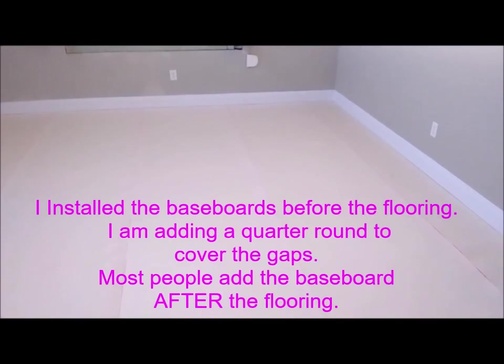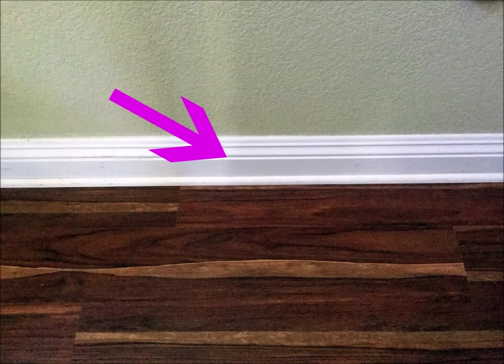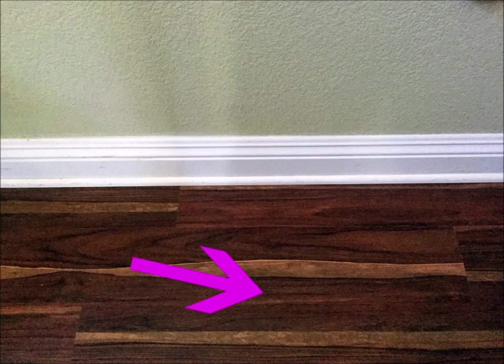So finally, here is the completed installation of the underlayment. Ready for the vinyl plank flooring to be installed. And this is how it all turned out with the base molding, cord around, and the vinyl plank floor.